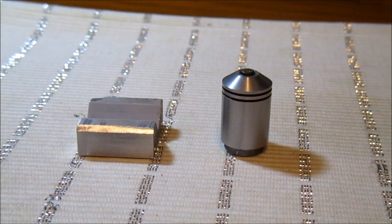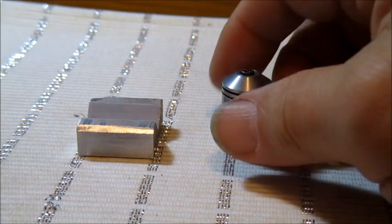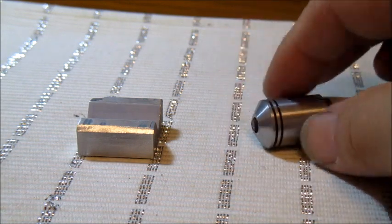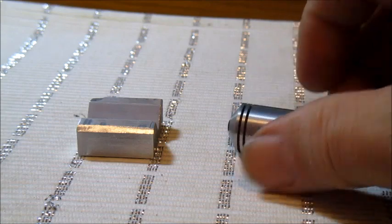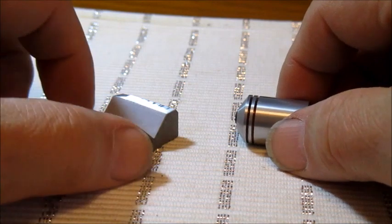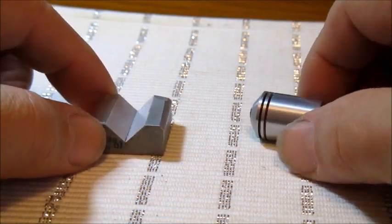So I need a microscope objective. I found this in my junk drawer, got it from Edmund Scientific years ago. Looks like I took the flange off of it. I'm going to set that in a little V-block.